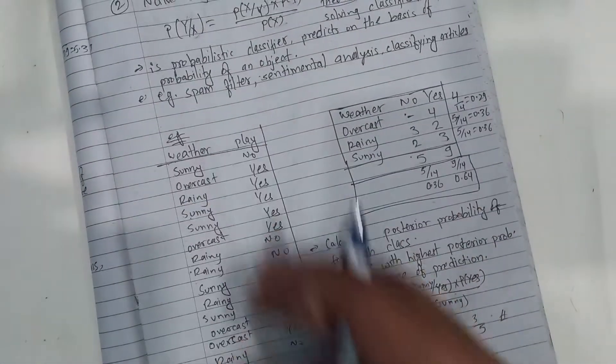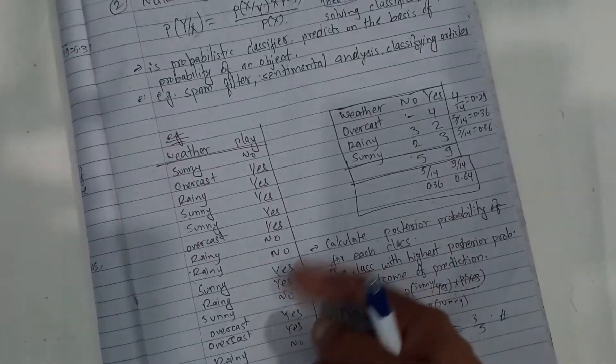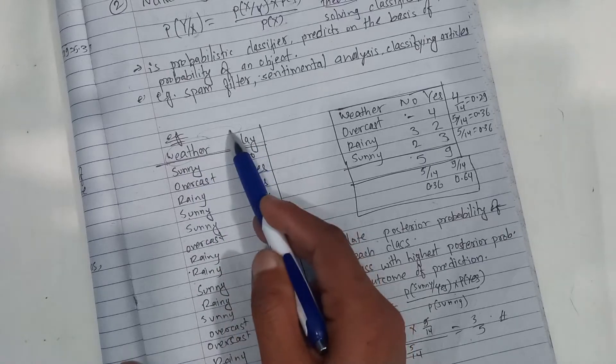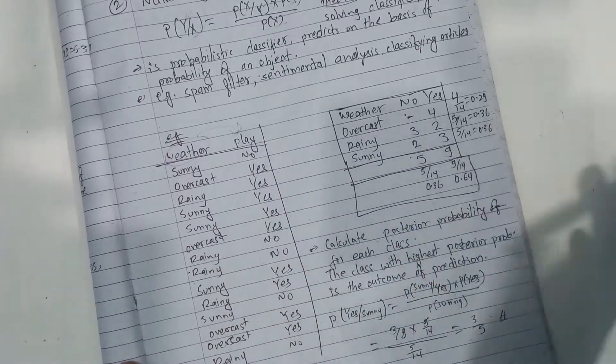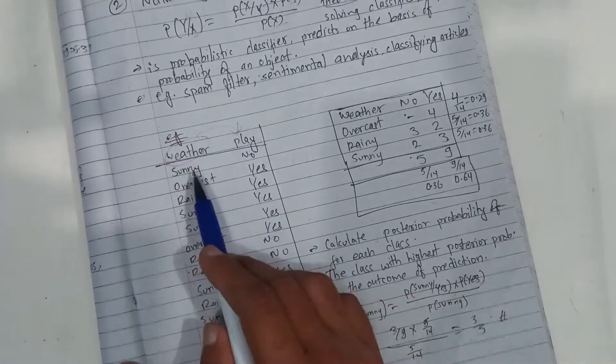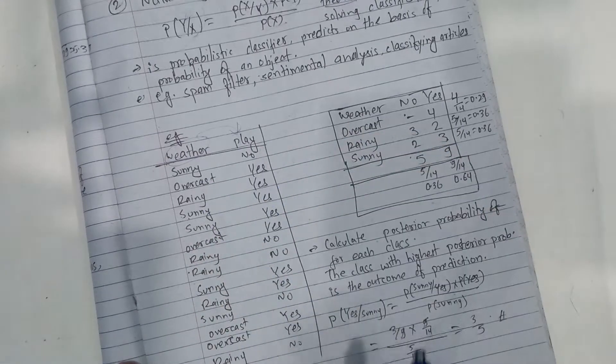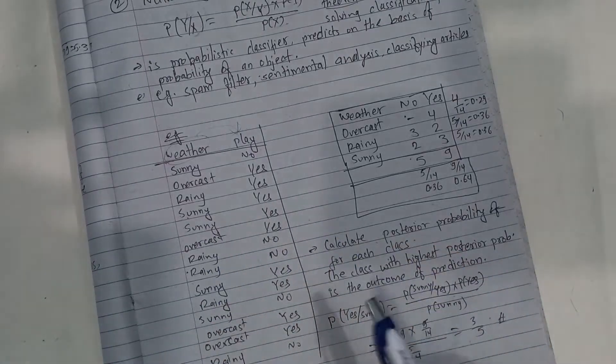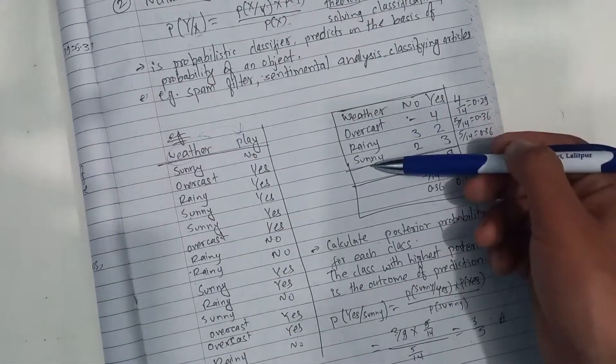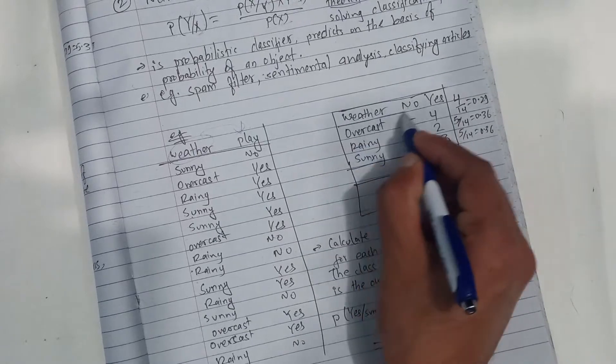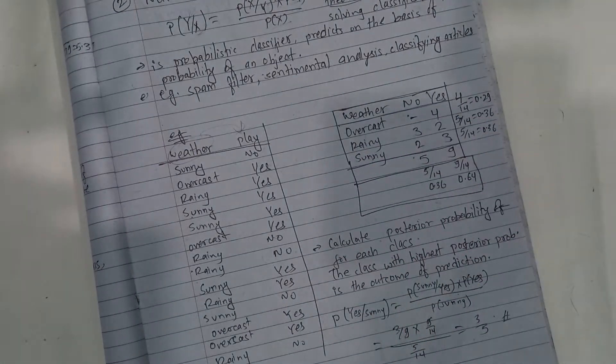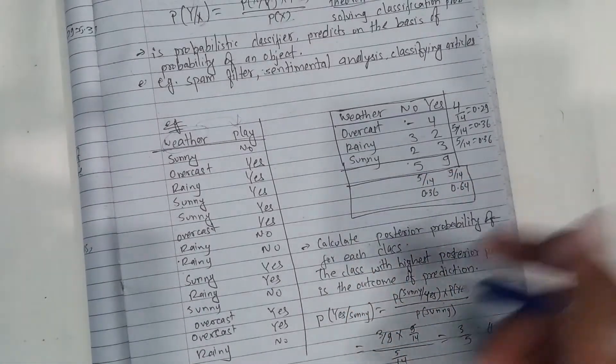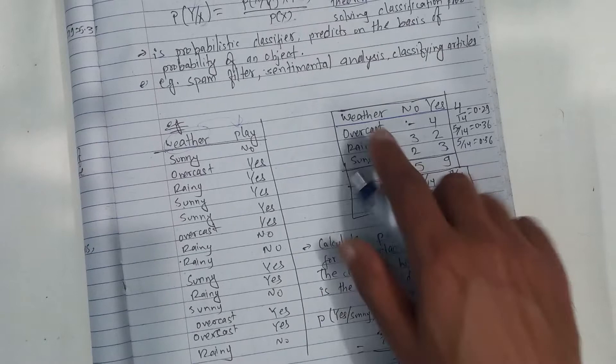Let's suppose we have given data based on outlook. We'll follow a frequency table approach.